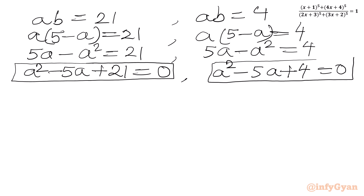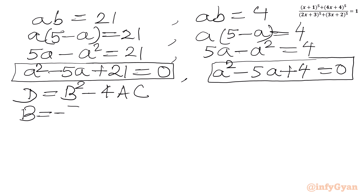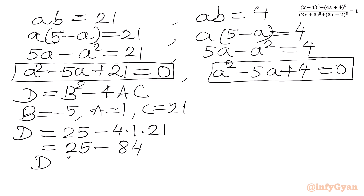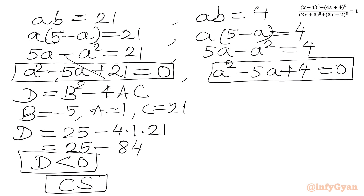I will calculate the discriminant of the first quadratic equation. d equals b^2 minus 4ac. Here b is negative 5, a is 1, c is 21. So d equals 25 minus 4 times 1 times 21 equals 25 minus 84, which is negative. So the discriminant is negative — we will get complex solutions, so we can reject this quadratic equation.